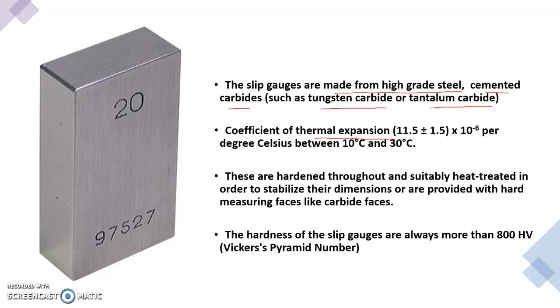It will be in the range of 11.5 plus or minus 1.5 into 10 raised to minus 6 per degree Celsius between 10 degree Celsius and 30 degree Celsius. We need to preserve these gauges within 10 degree and 30 degree Celsius for inspection purposes.